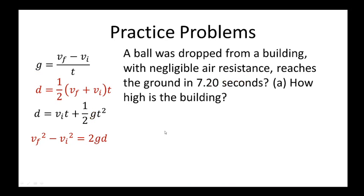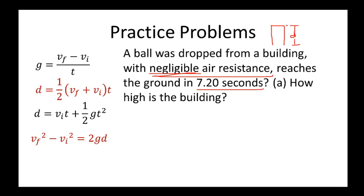Let's look at an example. A ball is dropped from a building with negligible air resistance — you will often see this condition stated as 'air resistance is negligible' or 'there is no air resistance,' so that the object falls freely. The ball reaches the ground in 7.2 seconds. How high is the building? We are asked to find the height of the building knowing only the time of fall.